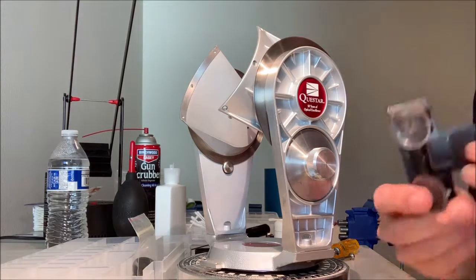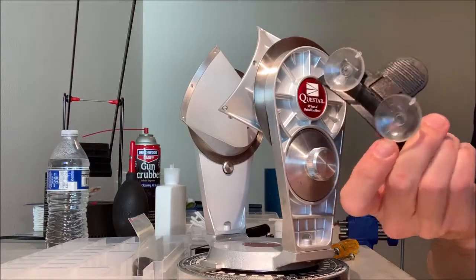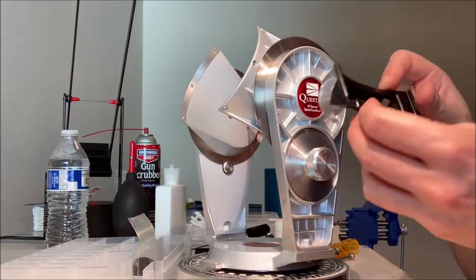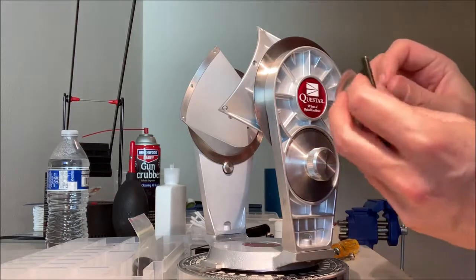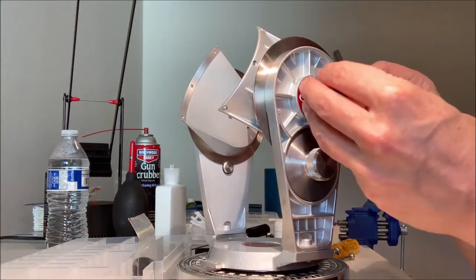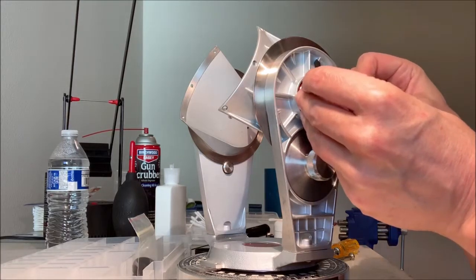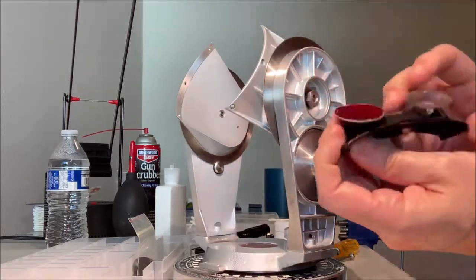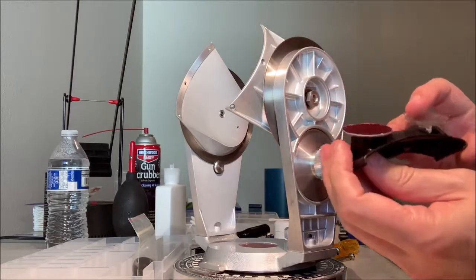So step one for removing is we use suction cups. This is a Valentine One radar detector windshield mount, and it's got just the right size of suction cup that I use that's just a little smaller overall. Sometimes, on the older models, I get lucky—ah, look, I got lucky on this one, too. It just popped right out.